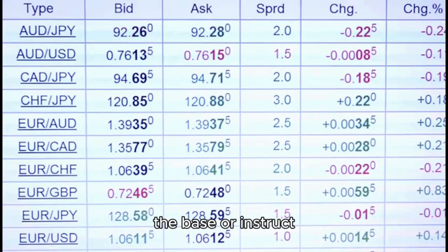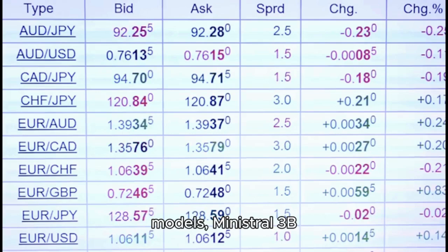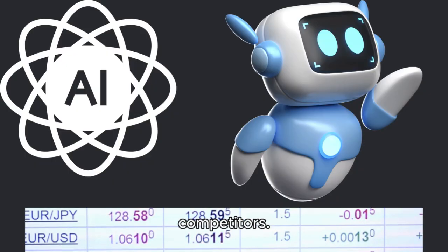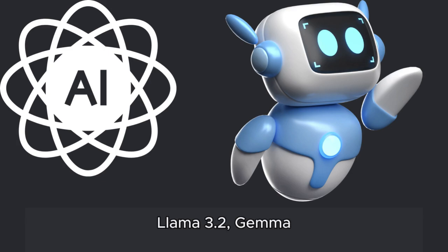Whether it's the base or instruct versions of the models, Ministral 3B and 8B consistently outperform their competitors. Compared to models such as Llama 3.2, Gemma 2, and even the larger Mistral 7B, Les Ministraux demonstrate superior efficiency, speed, and overall performance.